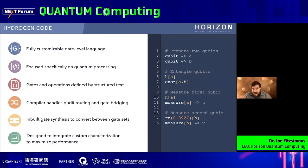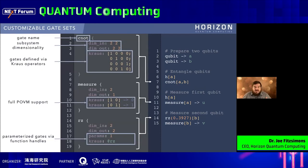Above this hardware layer, we have a gate-level programming language. This is similar to Qasm or Quil — pretty much all quantum gate languages are very similar. One difference in our language, which we call Hydrogen, is that each of the operations within it — you see qubit, h, and c0 on the right — our compiler doesn't actually know what any of them are. Instead, each is defined in a structured text file. For example, c0 is defined with two input subsystems each of dimension two and two output subsystems each of dimension two, defining this as a two-qubit gate by its Kraus operators — in this case a unitary, so there's only one Kraus operator.